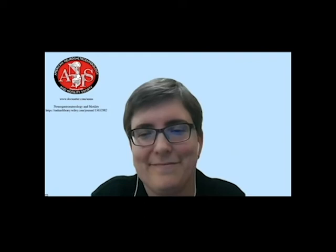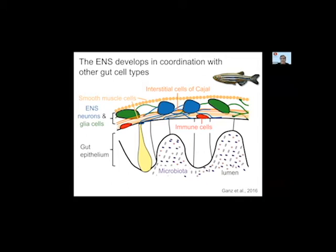Hello everyone, and thanks for the nice introduction. I would like to thank the organizers for inviting me to this virtual symposium. Today I will talk about the influence of the ENS on gut motility and consequently on the colonization of the gut by microbiota, and how the ENS influences microbiota composition and inflammation. As you've heard already, the ENS develops in close coordination with other cell types in the intestine. During development, the ENS exchanges signals with developing smooth muscle cells and gut epithelial cells that are necessary for proper development of all cell types. The question is also, does the ENS influence other components of the gut — for example, the colonization of the gut by the microbiota or the immune cell response?